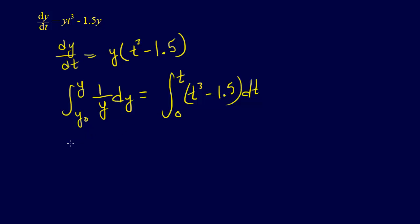And so when we do this integration, we've done this before, we're going to get ln of y, and I'm going to go ahead and plug it in, so it'll be ln of y minus ln of y naught is equal to, so this indefinite integral is going to be t to the fourth over 4 minus 1.5 t. And then we're going to plug in t and 0, so if we plug in 0, everything's going to go away, so we'll just have is equal to t to the fourth over 4 minus 1.5 t.